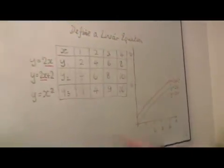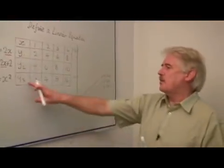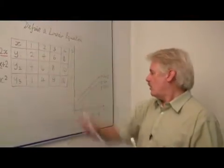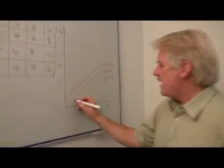But our other graph, our third graph, y equals x squared. Now, what does that do? Well, let's plot it. 1 and 1. x is 1, y is 1, which is there.